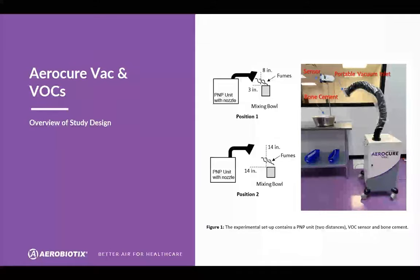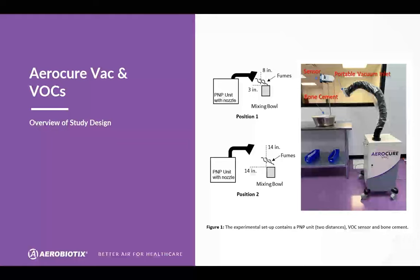Next, we'll look at volatile organic compounds. In this case, we're looking at the mixing of methyl methacrylate bone cement, which is commonly performed in orthopedic procedures, particularly in joint replacement and trauma cases. Methyl methacrylate monomer is mixed in a bowl, creating a large amount of volatile acrylate fumes which have been shown to be carcinogenic and toxic. We placed the bone cement mixing bowl right below a VOC sensor, with the AeroCare VAC in two different setups — one 8 inches above and one 14 inches above.